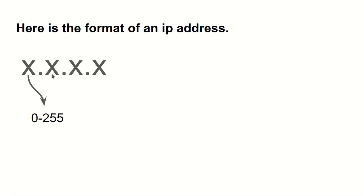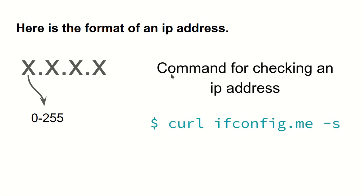Each of the four X values is in the range 0 to 255. If you want to check your IP address, you can simply write the command: curl ifconfig.me -s. It will show you the IP address of your computer in the command prompt or terminal. This is the command for checking out your IP address.